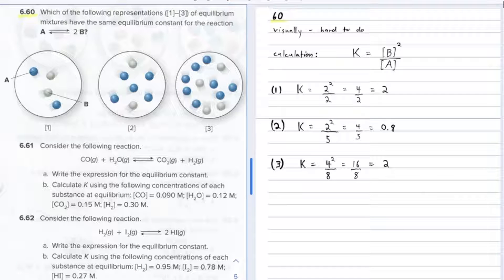Problem 60. Which of the following representations, one through three, of equilibrium mixtures have the same equilibrium constant for the reaction A forms two B's?